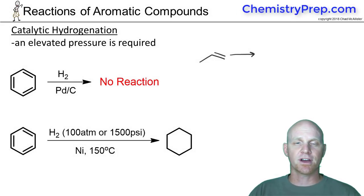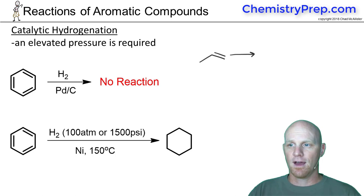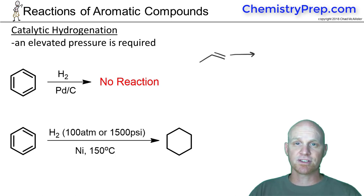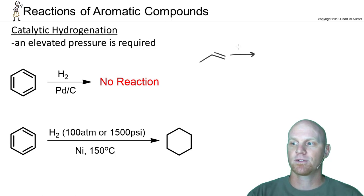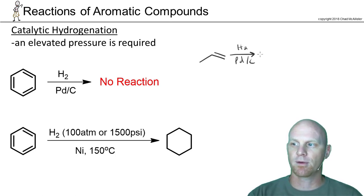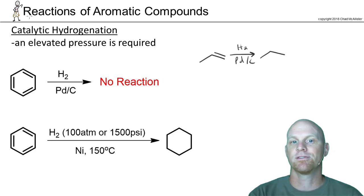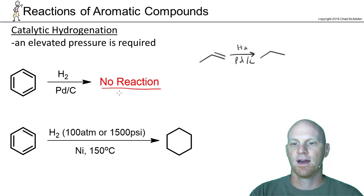Next, we're going to take a look at a couple of reductions of the benzene ring itself, and the first one I want to look at is just complete reduction — simple catalytic hydrogenation. It turns out that what you did with alkenes, where you just used H2 palladium on carbon or something like that and got an alkane, that is not going to be sufficient here with benzene.